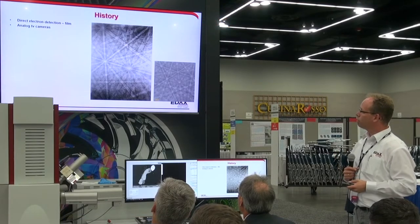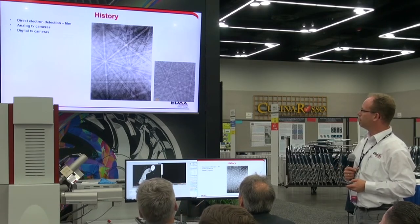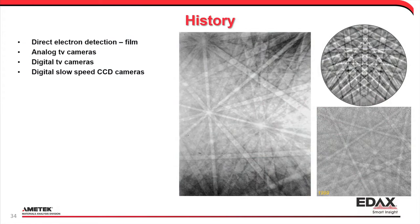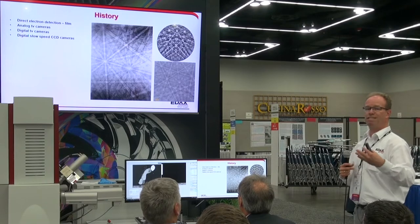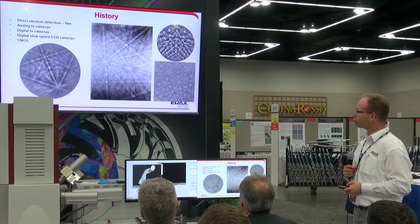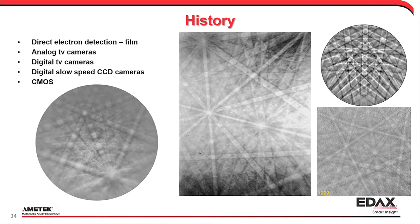In the late 1990s, improvements in these analog cameras came about, and they were replaced by digital slow-speed cameras. 'Slow speed' is a bit of a misnomer — it means we can set the exposure time, from a few milliseconds to 10 or 20 seconds. That really improved pattern quality dramatically. And then, as Matt just showed, the evolution from CCD cameras to CMOS gives really nice patterns at much higher speeds.